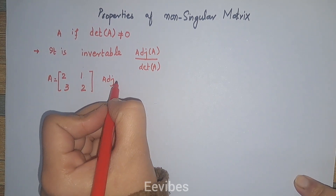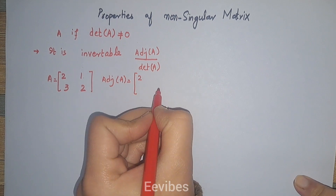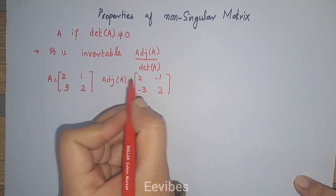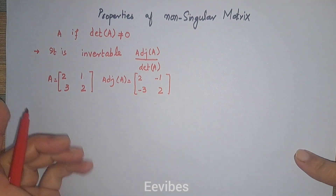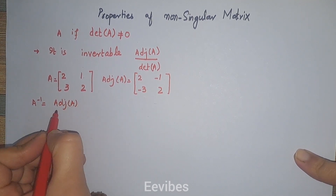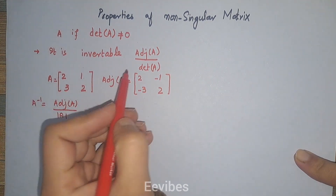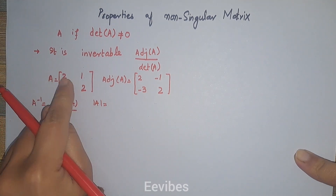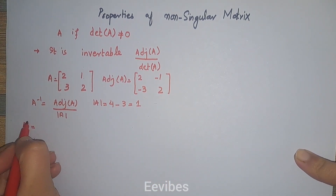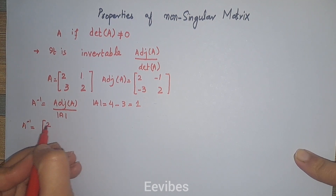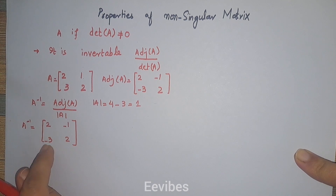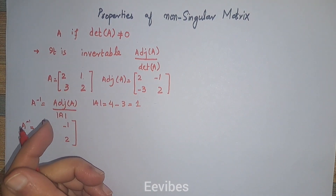We find the adjoint of A by switching the diagonal entries — here both diagonal entries are 2, so they remain as-is — while we invert the signs of the off-diagonal entries. Then the inverse of A equals the adjoint of A divided by the determinant of A, denoted by straight-line bars. In this case, the determinant of A equals 2×2 − 3×1 = 4 − 3 = 1. So A inverse simplifies to the matrix with entries 2, −1, −3, 2 (each divided by 1). The inverse of A will always exist whenever the system is non-singular.